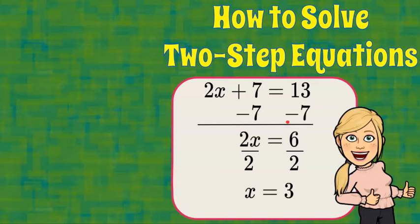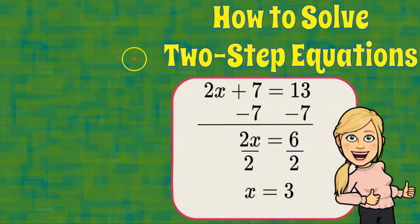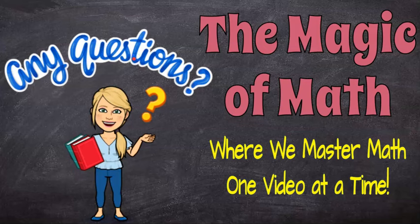So there you have it — those are the steps to solving a two-step equation. Even though there are only two steps, remember: add or subtract first, then multiply or divide, and don't forget to check your solution. Thanks for joining me today at the Magic of Math, where we master math one video at a time. I hope you'll come back soon, and have a great day.